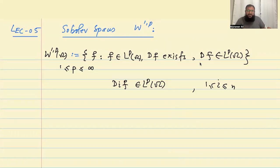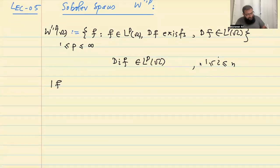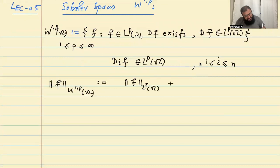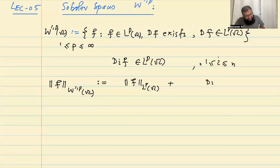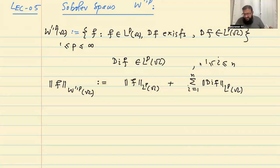This is how I define this space. Now, I am saying this is a normed space. To define what's going to be the norm on this space, there are many ways, but I am going to define it simply. The W1P norm of F over omega is the Lp norm of F over omega plus the sum from i=1 to n of the Lp norms of D_i F. Because if this is only the Lp norm, then this would be just Lp space, not a Sobolev space.